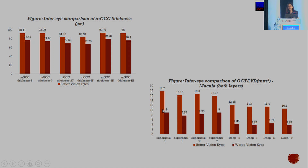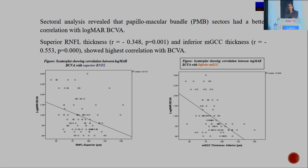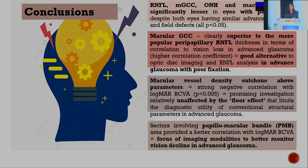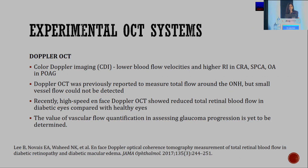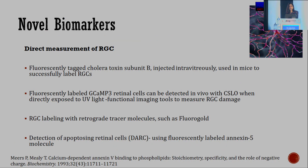Eyes with better vision had better vascular density compared to the poorer eyes. A large number of vascular dropout areas can be seen in the poor-vision eye despite symmetrical cupping. Sectoral analysis also revealed that papillomacular bundle sectors had a better correlation with visual acuity, and GCC was found to be superior to RNFL in predicting visual loss in advanced glaucoma per AUROC curves. Novel biomarkers are also emerging, including direct measurement of retinal ganglion cells using fluorescent-tagged cholera toxins, fluorescent-labeled cGAMP3 cells, and detection of apoptosing retinal cells.